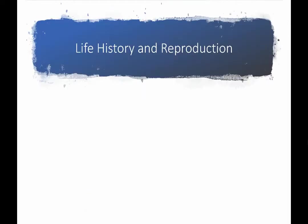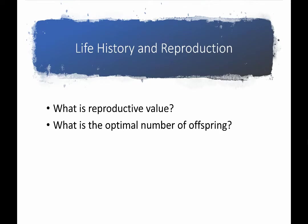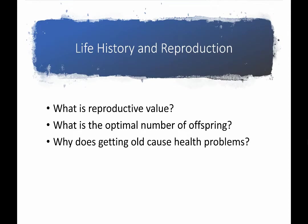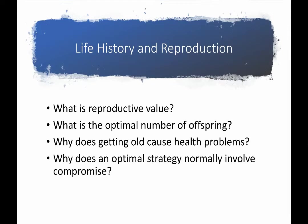We'll be considering a number of questions in this lecture: What is reproductive value? What is the optimal number of offspring for a parent to have? Why does getting old cause health problems? And why does the optimal strategy normally involve compromise? That is a theme that will come up again and again in this lecture series.